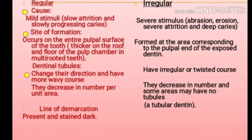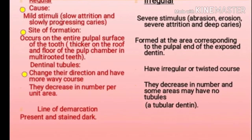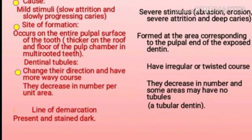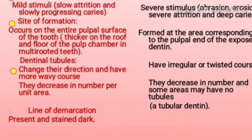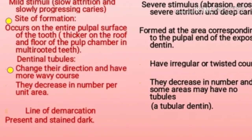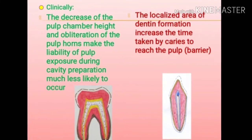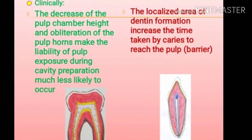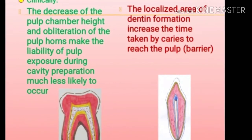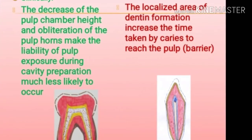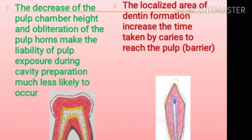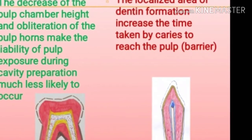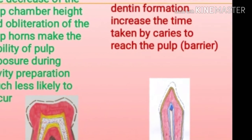In regular secondary dentine, the line of demarcation is present and remains dark, while in irregular secondary dentine, the line of demarcation may or may not be present. Clinically, the decrease in pulp chamber height and obliteration of pulp horns makes pulp exposure during cavity preparation much less likely to occur. In irregular secondary dentine, the localized area of dentine formation increases the time taken by caries to reach the pulp barrier.